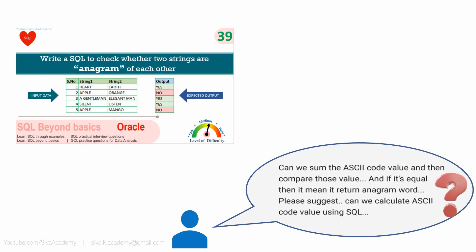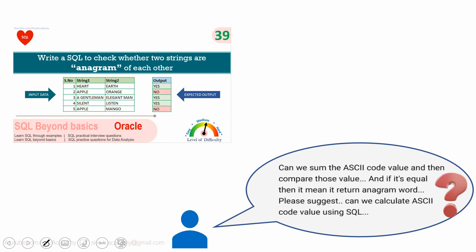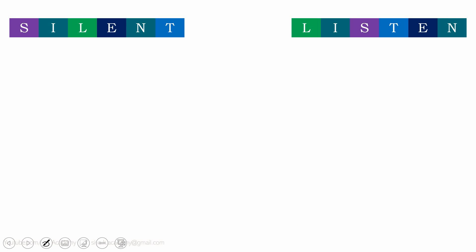Now let us revisit the comment. The comment asks: can we take the sum of ASCII values of all the characters in each string and then compare the summations? If the sum is equal, can we say that the two strings are anagram of each other? So the question is: can we calculate the ASCII code and take the summation of ASCII values of all characters, then compare? Yes, it is possible. In fact, I have never used the ASCII function in real-time applications till now, but this is one good use case where we can use the ASCII function.